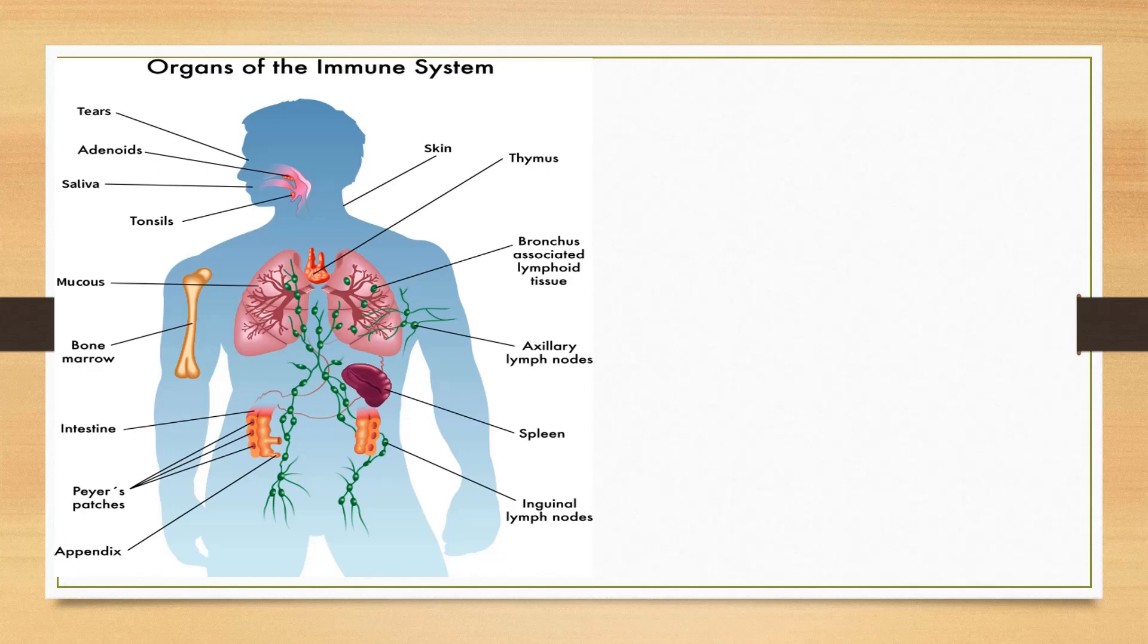Lymphoid organs of the immune system protect our body from infection. Lymphoid organs are of two types: primary and secondary lymphoid organs.